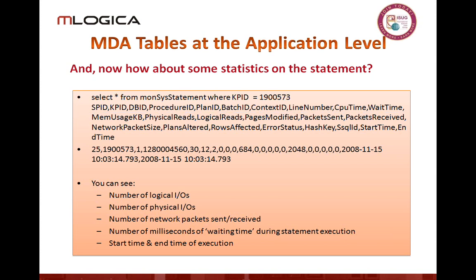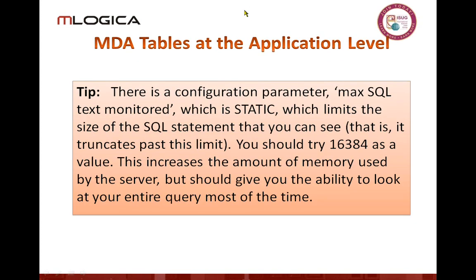Occasional spike events — you're going to spike occasionally because resource utilization is not going to be consistent on any server. If you are going to use these, there is a particular config parameter called MaxSQL Text Monitoring. Some of you who are used to looking through SP Sysmon output, every once in a while you see a message that says consider reducing the size of MaxSQL Text Monitoring. I recommend keeping it at about 16K.